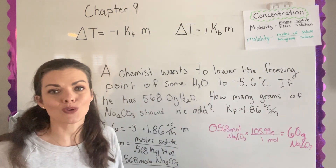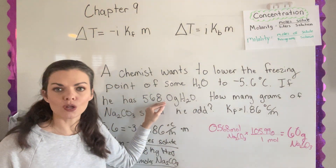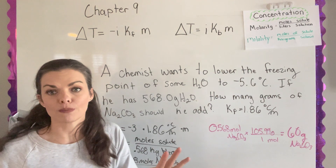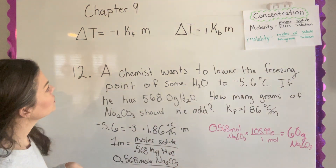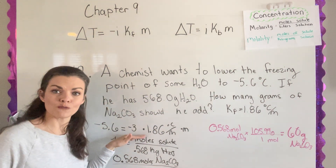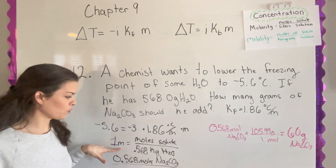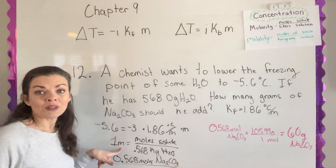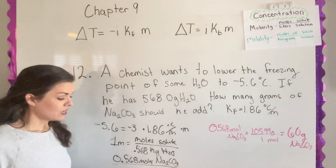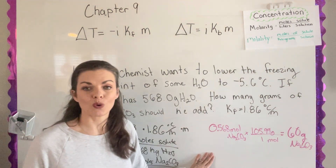So 60 grams of sodium carbonate added to 568 grams of water should lower the freezing point by 5.6 degrees Celsius. To recap: we used the freezing point depression formula, put in what we knew, solved for molality (which was one), used that to find moles of solute, and converted moles to grams — which is what the question was asking for.